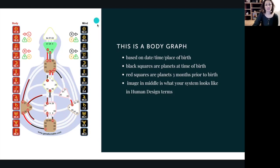The black squares you see on this side are the position of the planets at the time of your birth. And on the left, the red squares are the position of the channels of the planets three months prior to your birth. So we say in human design that there is this sort of subconscious layer that is formed by the positions of the channel of the planets three months prior to your birth.